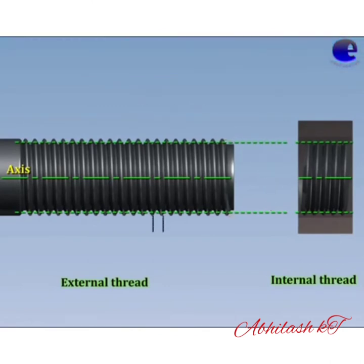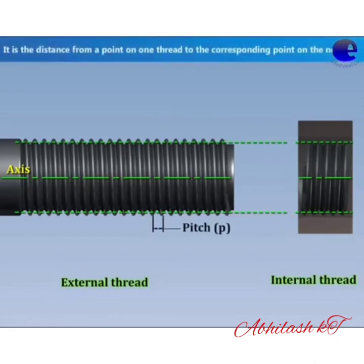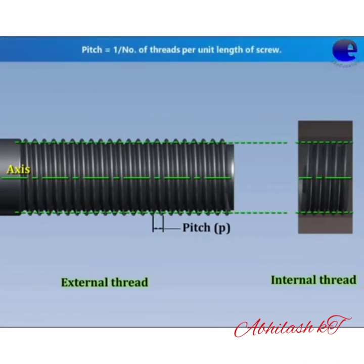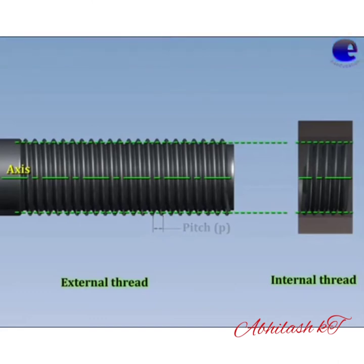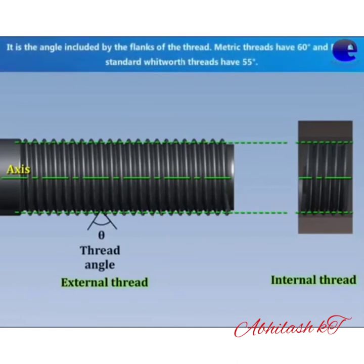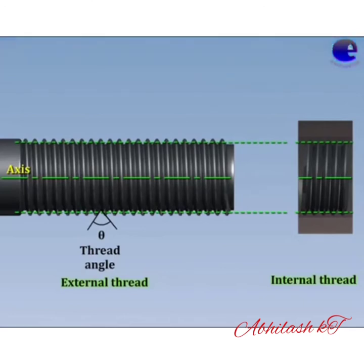Next is pitch. It is the distance from a point on one thread to the corresponding point on the next thread, marked as the distance between crest to crest. It is also defined as the number of thread forms per unit length of the thread, denoted by letter P. Next is thread angle — it is the angle included by the flanks of the thread, measured in the axial plane. Its angle is 60 degrees or 55 degrees.